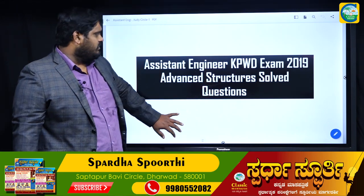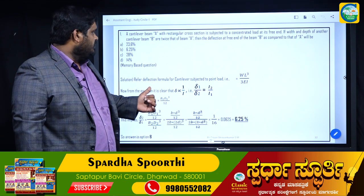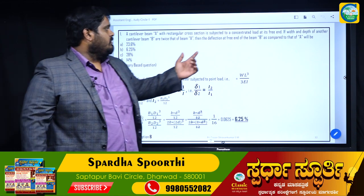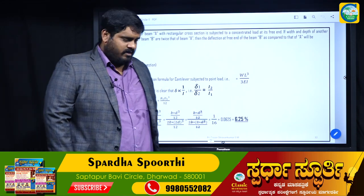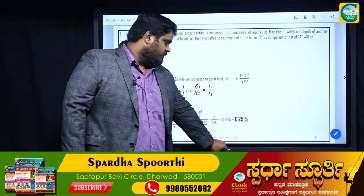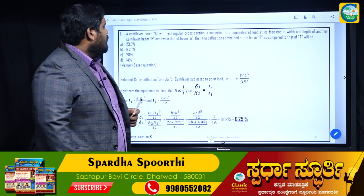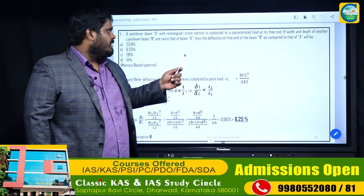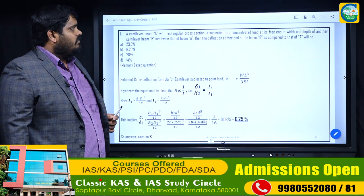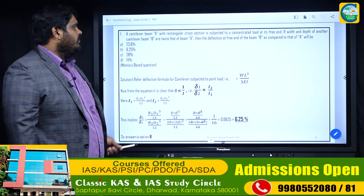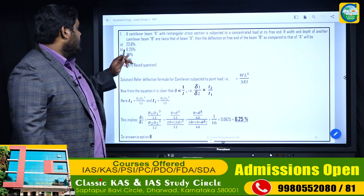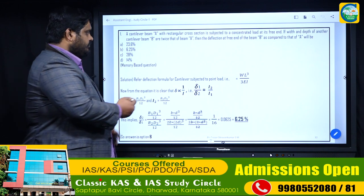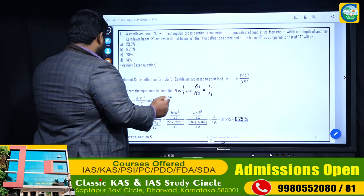Let us start with advanced structures. There is one particular question about a cantilever beam subjected to a concentrated load at its free end. If the width and depth of another cantilever beam B are twice that of beam A, the deflection at the free end of beam B as compared to that of A will be — options are: 23, 6.25%, 28%, and 14%.